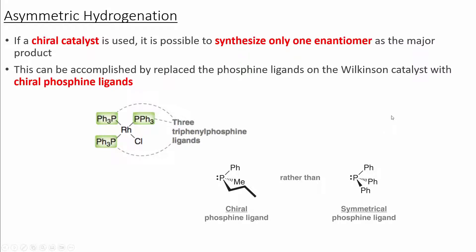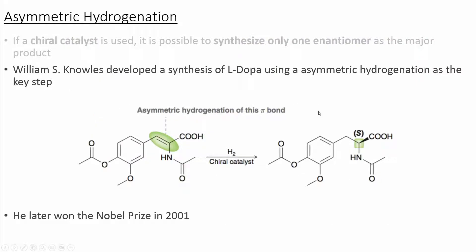In some cases, we can actually replace some of the ligands on the catalyst with chiral ligands. What this allows us to do is to take an achiral starting material and create one specific enantiomer of the product. For example, in this hydrogenation, we can take our chiral catalyst and add hydrogen across the double bond in a way that produces a new stereocenter in just one configuration.